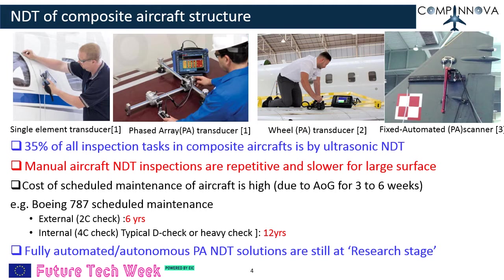The cost of scheduled maintenance of aircraft is very expensive to the airline industry, as is the cost of unscheduled maintenance. However, fully automated and autonomous NDT solutions and operations are not available for composite aircraft, and this is the key motivation for automation.